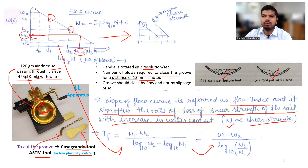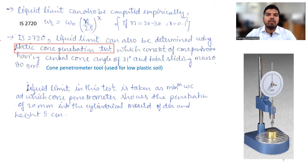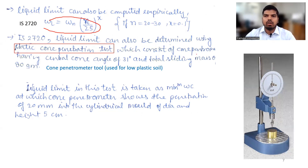If we have two flow lines, the one with a larger number of blows indicates higher shear strength. Empirically, as per IS 2720, the liquid limit is determined using a standard expression. The liquid limit can also be determined using the static cone penetration test, which uses a cone penetrometer with a central cone angle of 31 degrees and a total sliding mass of 80 grams.